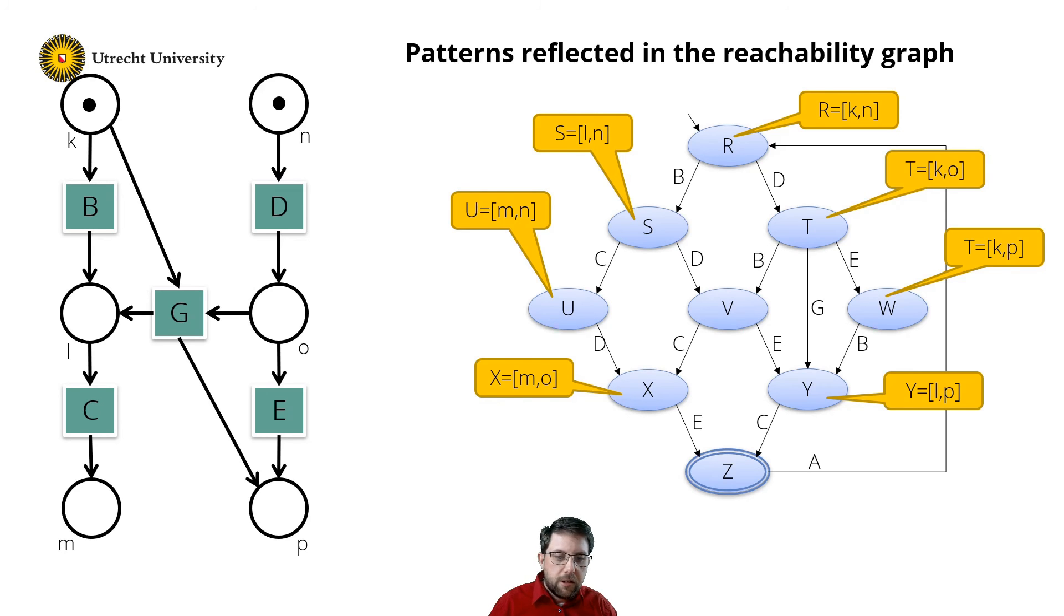And a similar observation I can do for state A. Because in state A, Z is marking M and P. And A removes the tokens from M and P. So I can add an A, and add input places M and P.